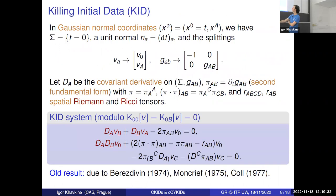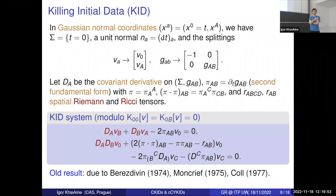Looking at the Killing Initial Data equations, they explicitly involve the extrinsic curvature and the Ricci tensor of the metric on the surface. One thing you could do is require that these equations have solutions — their integrability conditions impose conditions on the initial data themselves. You could use these equations to come up with initial data that will admit higher numbers of Killing vectors or conformal Killing vectors, and use them to build interesting initial data sets.